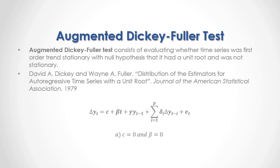Regarding the Augmented Dickey-Fuller Test, we have the following options. First, c equals zero and beta equals zero: ADF test without a constant and without a trend variable. Second, c different from zero and beta equals zero: ADF test with a constant but without a trend variable. Third, c different from zero and beta different from zero: ADF test with a constant and with a trend variable.